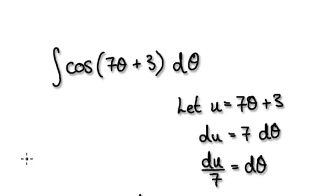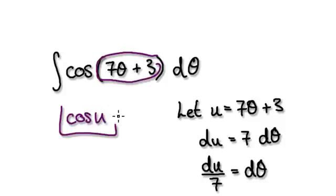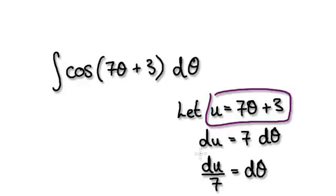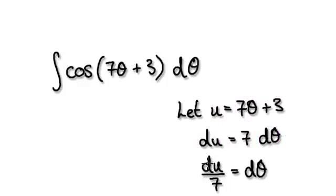Okay, so to do this, let u equal this thing here. So later this thing will become cos of u — nice and simple. So let u equal this thing here. And then if this is true, then du equals — differentiate this — d theta. Therefore, d theta equals this.